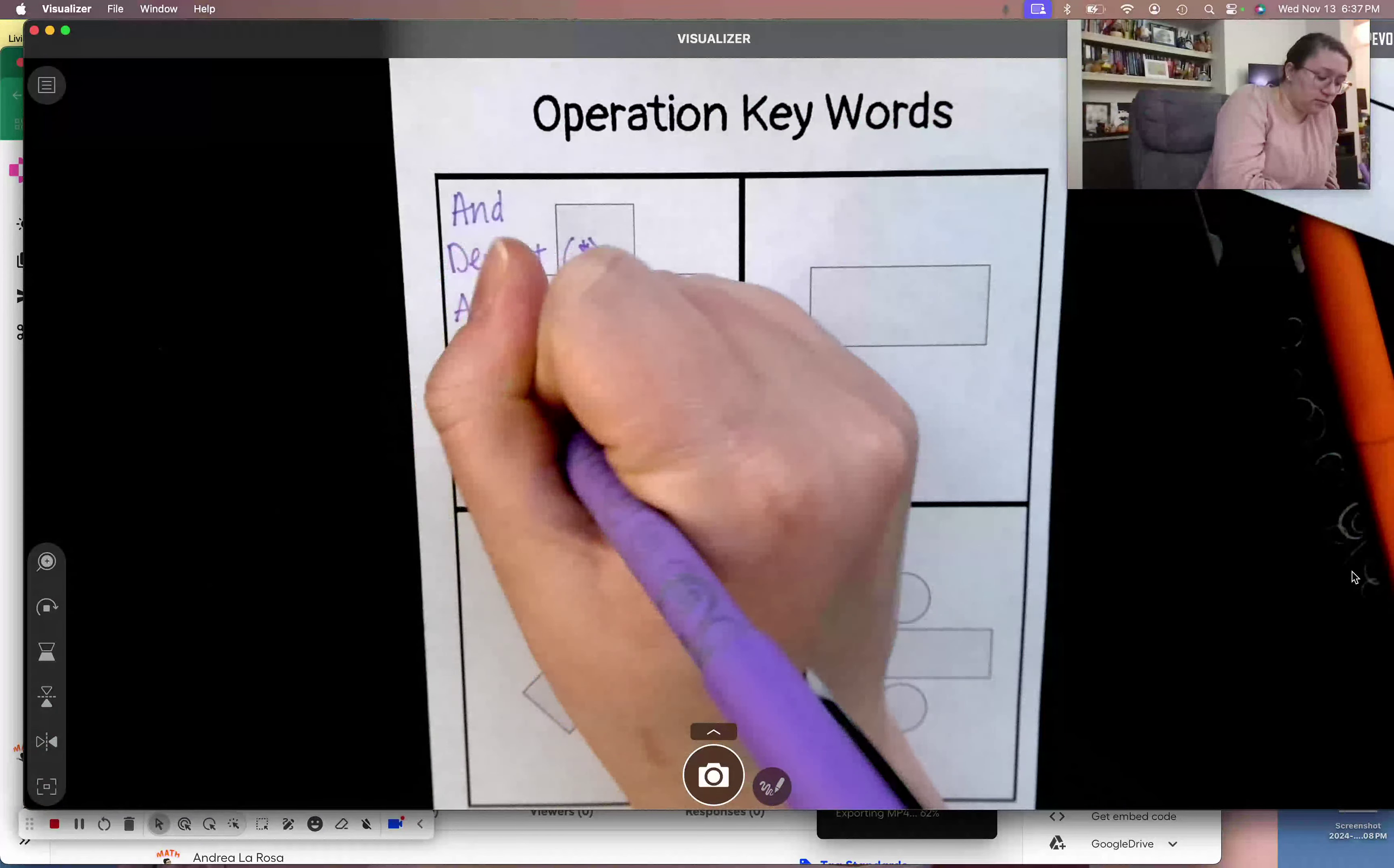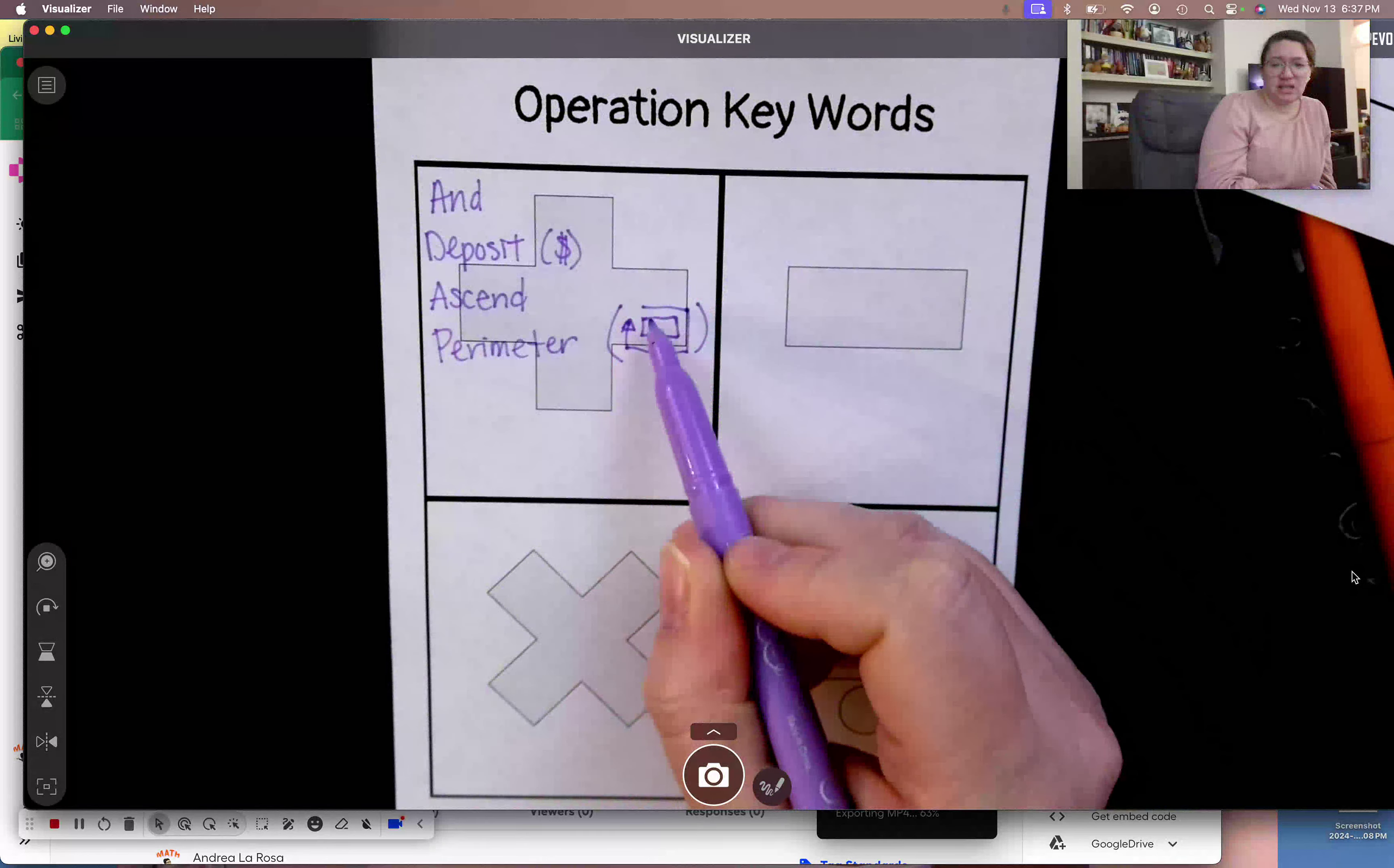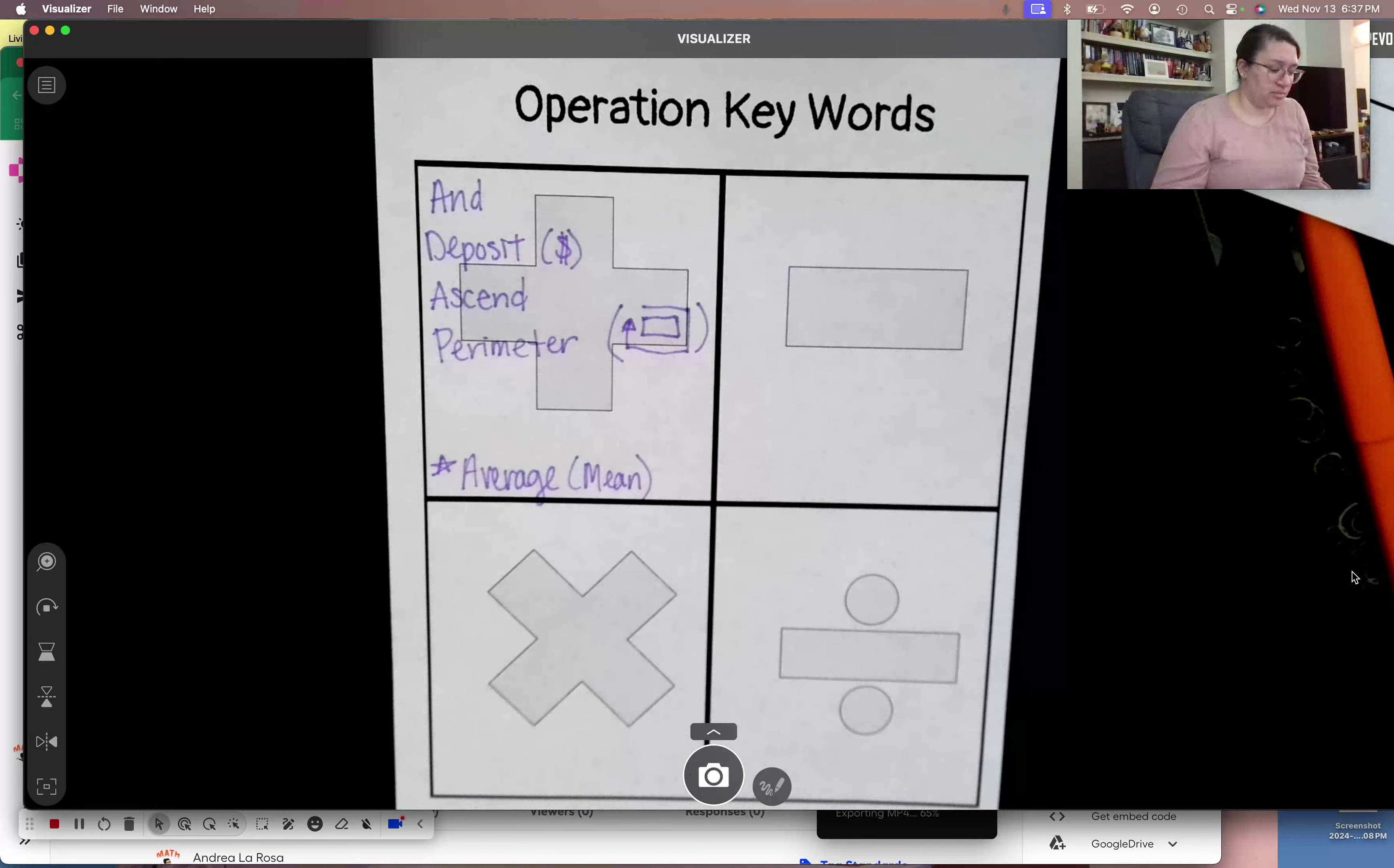And the other one is perimeter. You guys talked about perimeter in sixth grade. Perimeter is like if I have a rectangle, I want to know the distance all the way around it, I would add all of my sides together for my perimeter. And the last one, I'm going to put a star by. It's average. Or the mean. You guys learned that last year. That's where you add up all the numbers and divide by how many there are to get kind of a middle number for it. Go ahead and pause the video if you need to to finish writing those down.